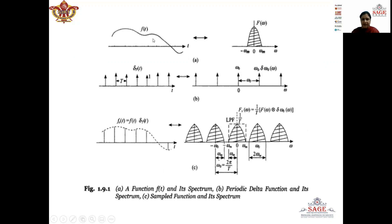To do the sampling, we multiply the message signal and the train of impulses in the time domain. When F(T) is multiplied by delta_T(T) we get F_S(T), that is our sampled signal. Here we can see that we get impulses but the amplitude of these impulses is no longer constant — it varies with the amplitude of the message signal. So we can say that we have taken samples of the message signal F(T) at an interval of capital T. To find the spectrum of the sampled signal F_S(T) we need to find the Fourier transform of the product F(T)·delta_T(T).